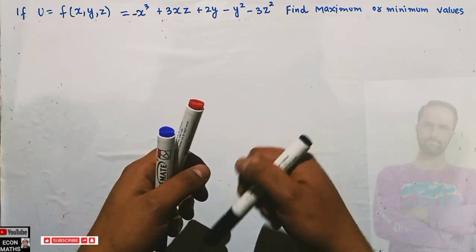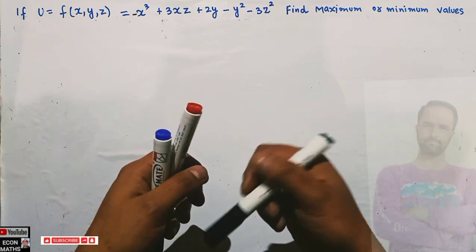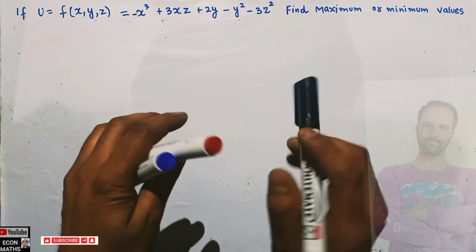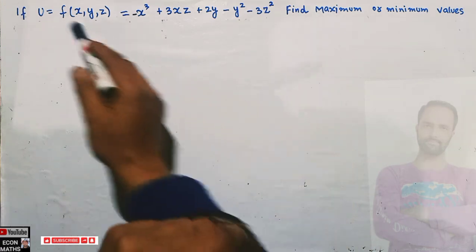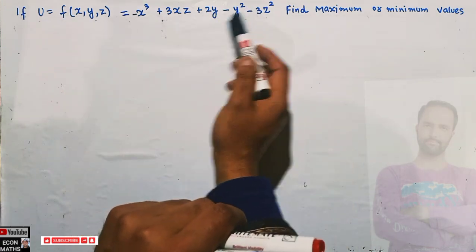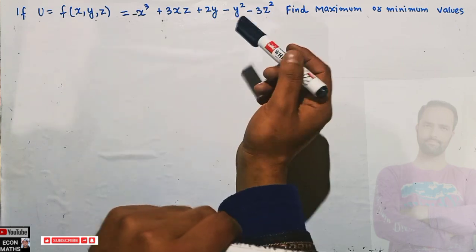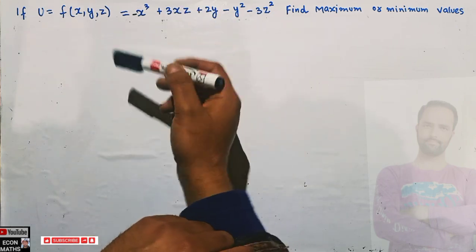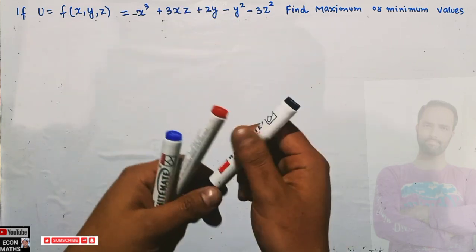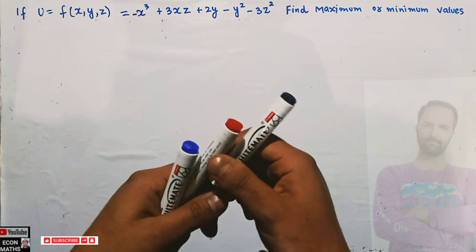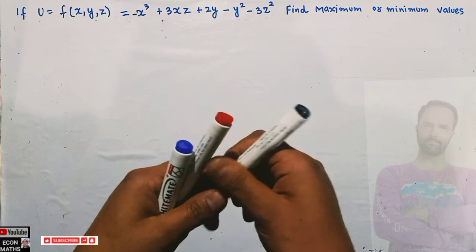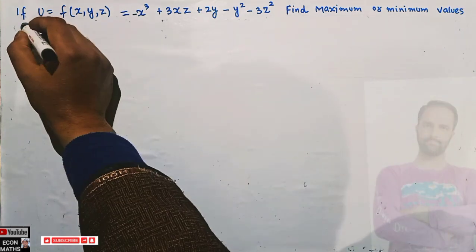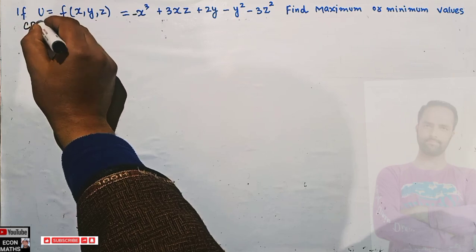This is an unconstrained optimization problem. How do we solve this? First we take the partial derivative of this multivariate function with respect to x, y, and z, and set them equal to zero and solve them simultaneously to get the critical points.